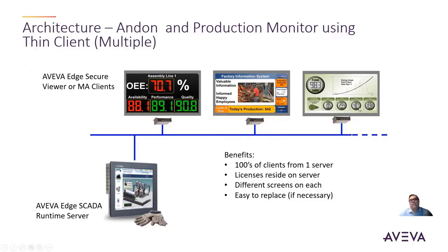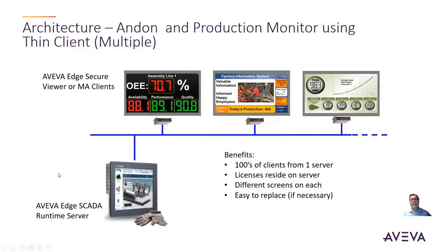This could also be a facilities-type application where you're monitoring energy usage or building automation. You can have the display rotating between different screens. And what's nice is these are easy to replace if necessary — basically, you put in a new device, configure it where it needs to go, and it's pretty much up and running.